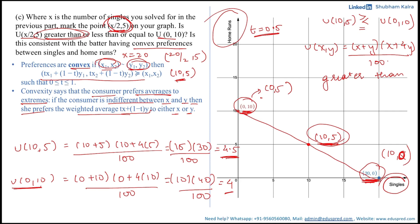Now applying the convexity definition: from the previous part we know that bundles 0 comma 10 and 20 comma 0 lie on the same indifference curve, meaning the consumer is indifferent between them — these are the two extreme bundles. We now need to check whether the consumer prefers the weighted average bundle 10 comma 5 to these extreme bundles. We can do this by comparing utilities or by drawing the indifference curve; here we use utilities since we have already calculated them.